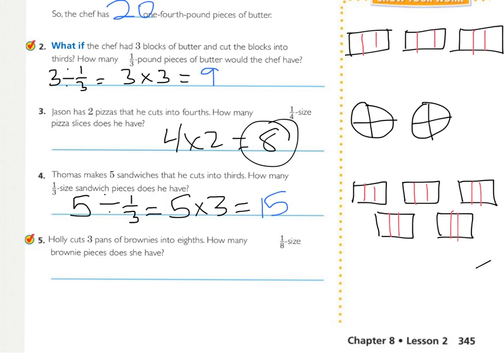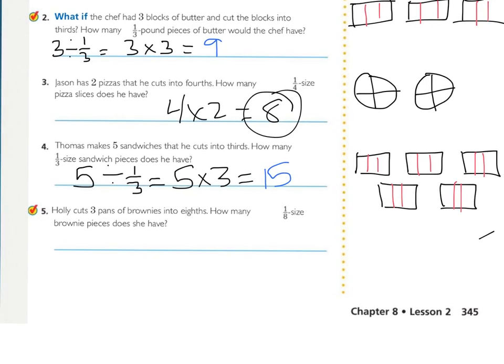Number five. Holly cuts three pans of brownies into eighths. How many one-eighth brownie pieces does she have? So how many pans do we need? I'm going to do it below it. Three pans of brownies right there. And now we need them into eighths. So this is what I'm going to do. I'm going to divide them into fourths right here. So there's four. And I'm going to cut them right in half.